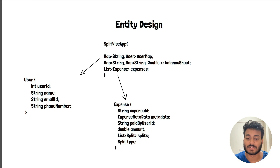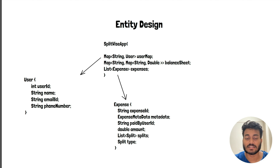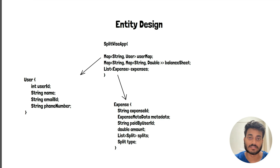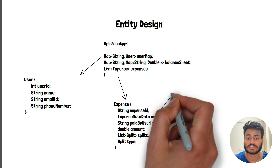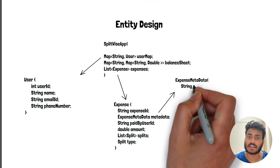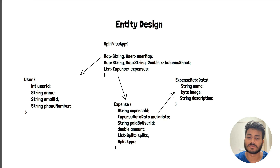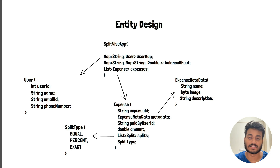The expense will also have a list of splits. In this list you can add the user IDs for whom you have paid. For example, if I paid for seven members, the list size will be seven with the corresponding amounts. The split type can be one of three types: equal, percent, and exact, as mentioned in the functional requirements.